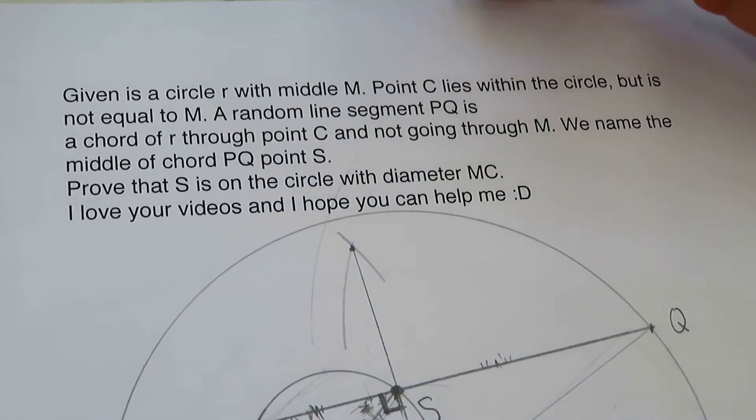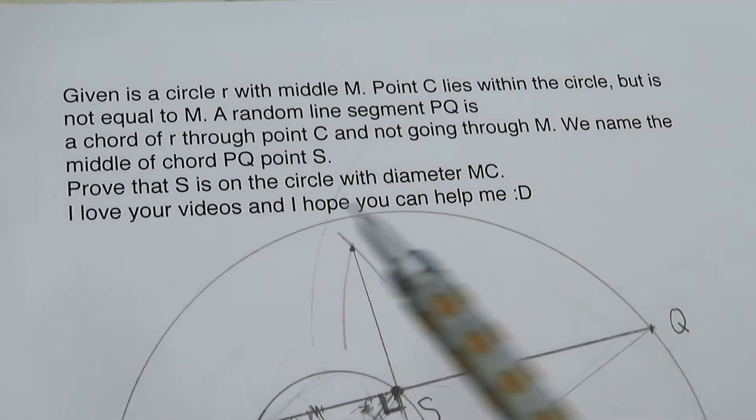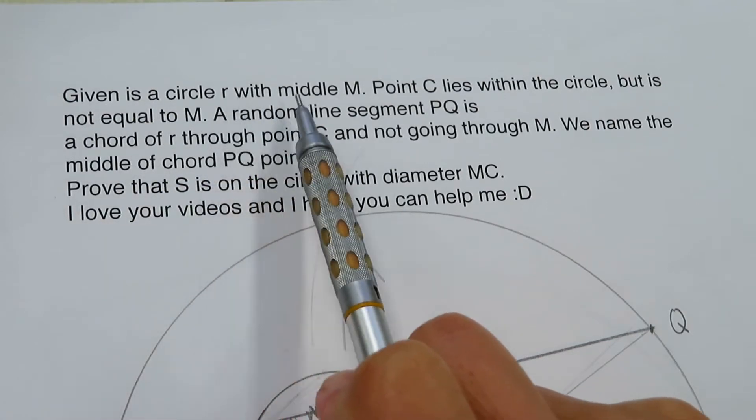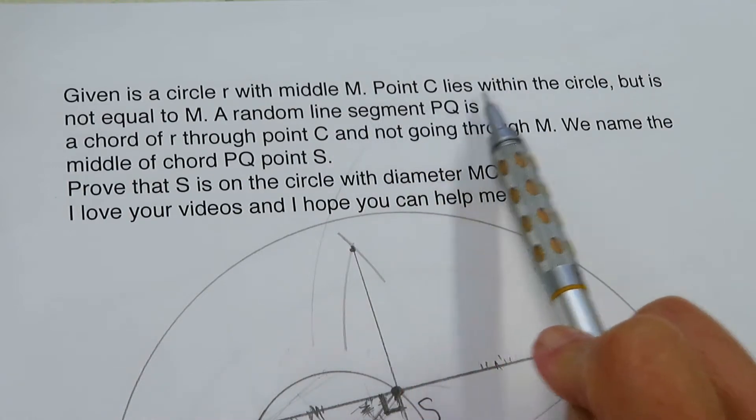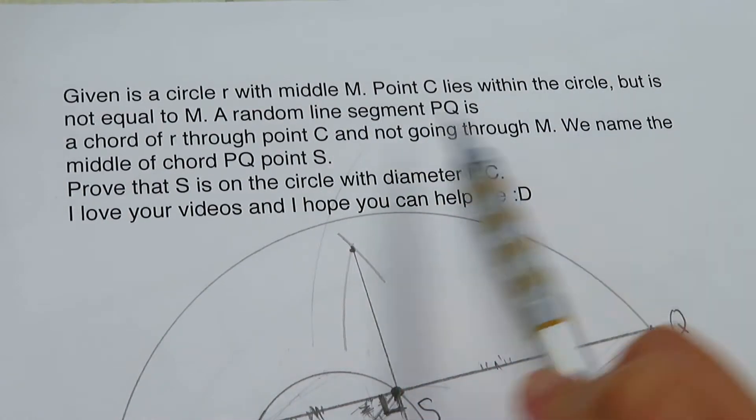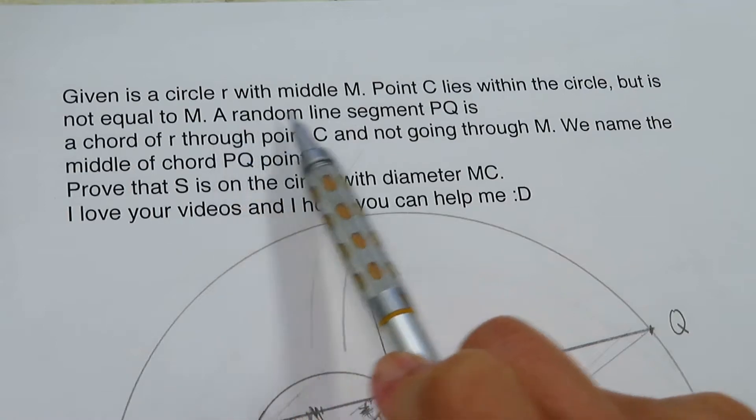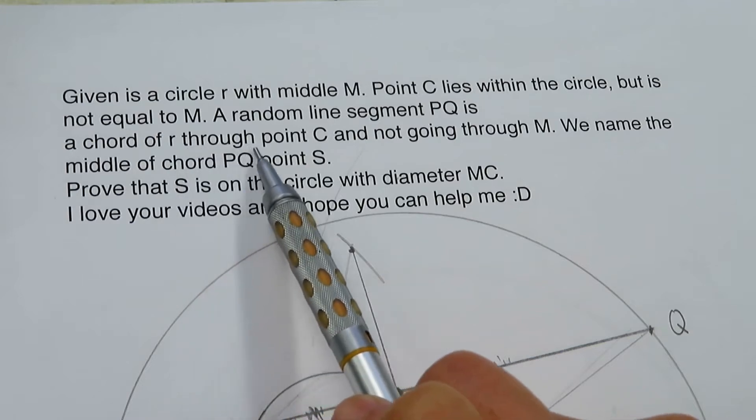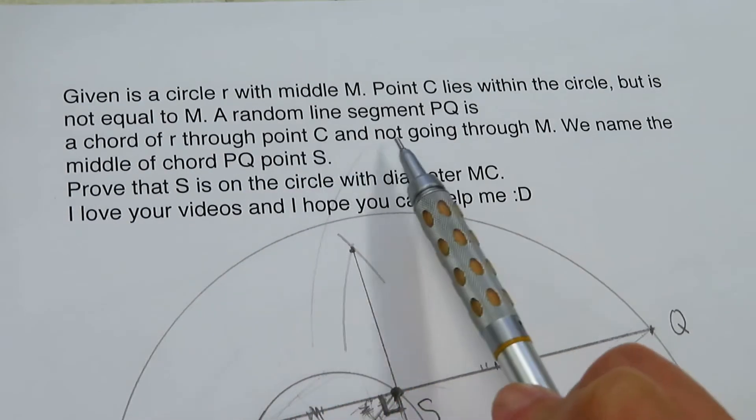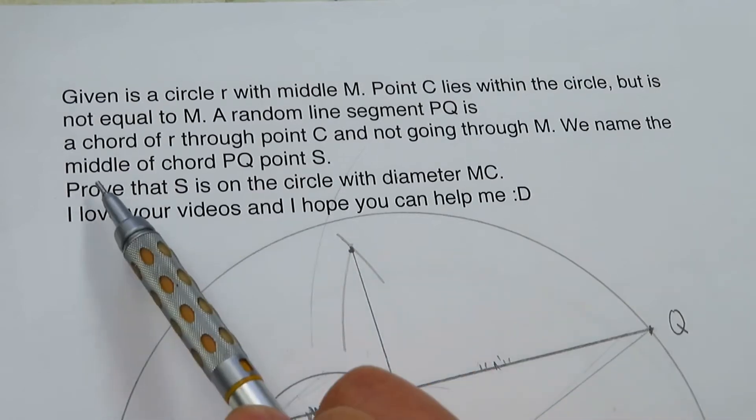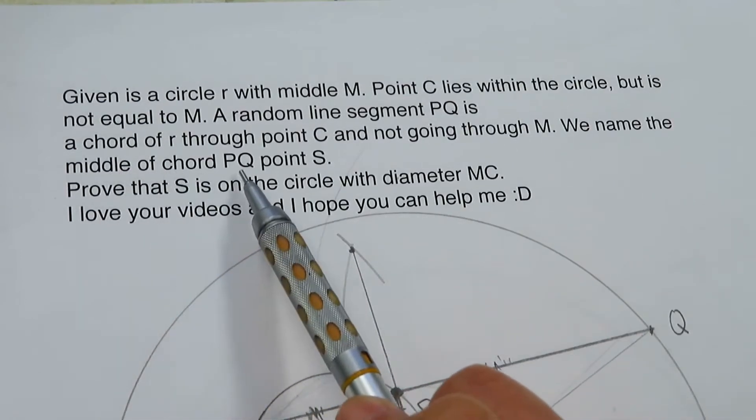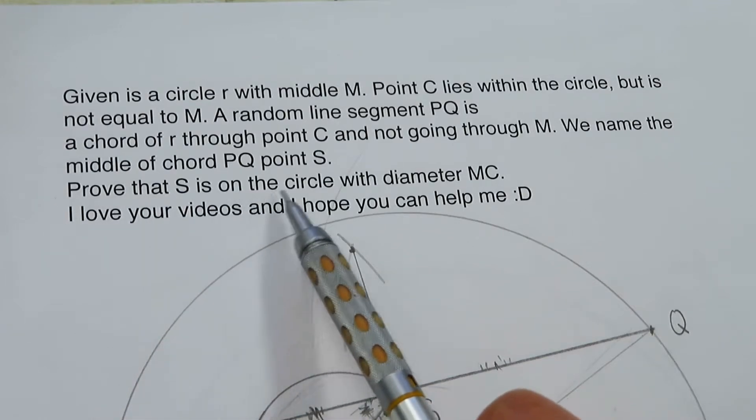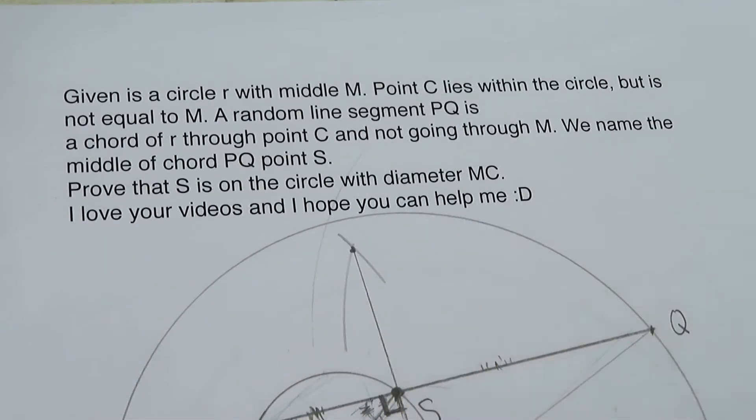Okay, hello dear friends. Here we have a geometry problem. Given is a circle R with middle M. Point C lies within the circle but is not equal to M. A random line segment PQ is a chord of R through point C and not going through M. We name the middle of the chord PQ point S. Proof that S is on the circle with diameter MC.